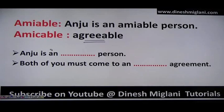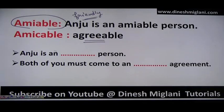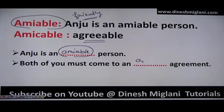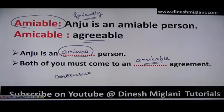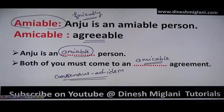Next: 'amiable' and 'amicable.' Amicable means agreeable — it deals with agreement. Amiable means having or showing a friendly disposition — it is basically used for friendly. For example: 'Anju is an amiable person' means she is friendly. 'Both of us must come to an amicable agreement' means an agreement where both parties agree. The Latin phrase 'consensus ad idem' — meaning meeting of minds on a particular thing — relates to amicable.